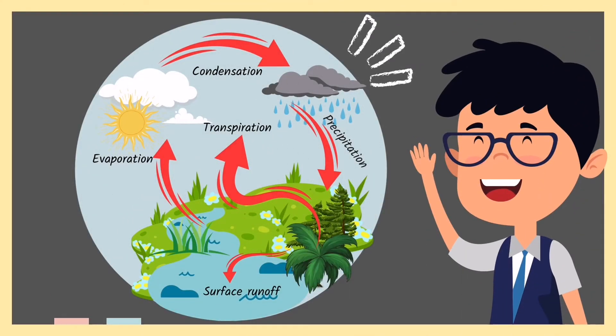I have here an illustration. Look at the illustration — what do you think it is all about? Correct! It's a water cycle. So what are the different forms of water in our environment? The different forms of water in our environment are solid, liquid, and gas.